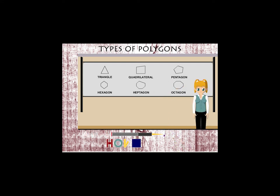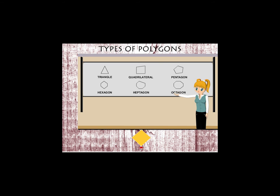All these shapes are examples of polygons. 'Poly' means many and 'gons' roughly means sides. So, figures with three or more sides are called polygons.